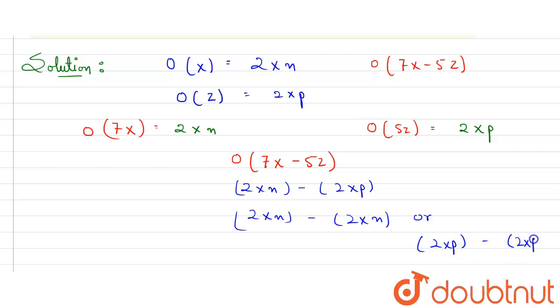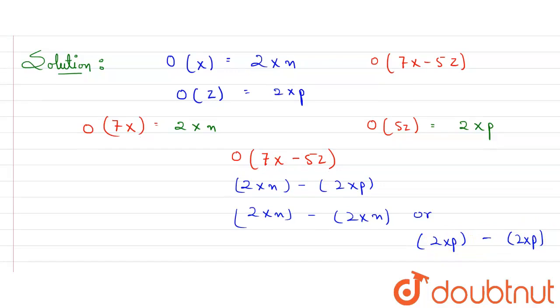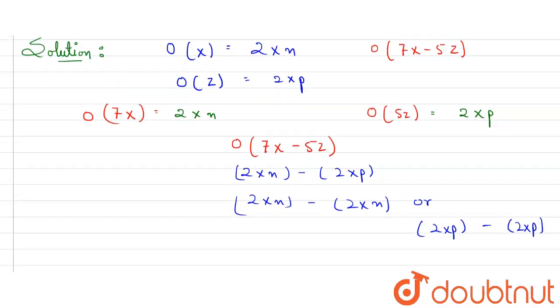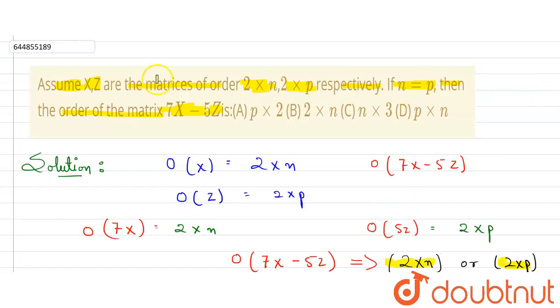We are talking about order, not value. We are not subtracting these two values; we are just talking about order here. So the answer will be: the order of this matrix will be either 2 × n or it will be 2 × p, because we know that if you want to subtract two matrices, then their order should be the same. So either both orders will be 2 × n, then answer will be 2 × n, or 2 × p. Let's match here: 2 × n or 2 × p—any one option can be correct. Here we are having 2 × n as option B, so this option will be correct.